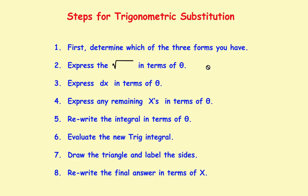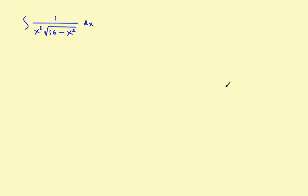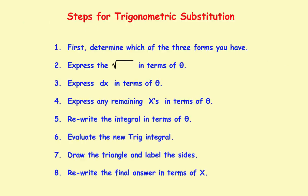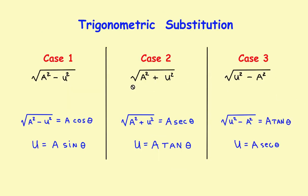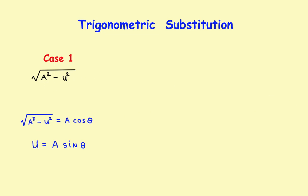There are eight steps altogether. The first step says: determine which one of the three forms you have. Looking at the problem, we've got the square root of 16 minus x squared. The three possible cases are: the square root of a squared minus u squared, a squared plus u squared, or u squared minus a squared. Since we have 16 minus x squared, it falls in the first category. So the square root turns into a times cosine, and u equals a times sine.